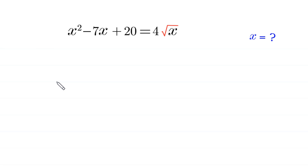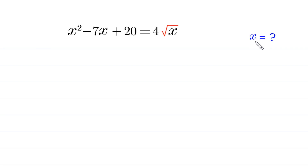Hello everyone, welcome to solving this very nice algebra equation: x squared minus 7x plus 20 is equal to 4 times root x. Our job is to find all possible values of x, so let's start.